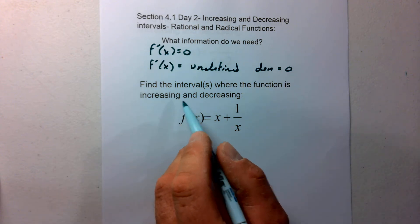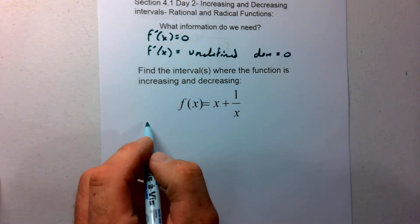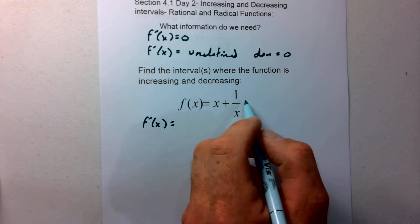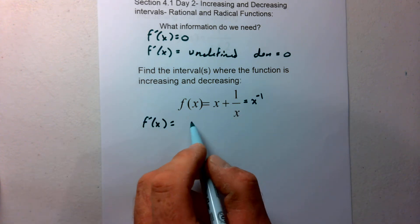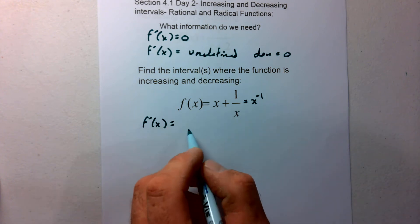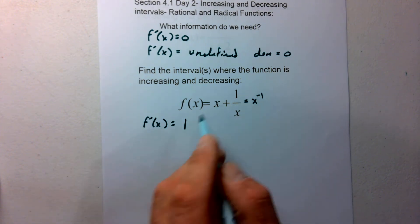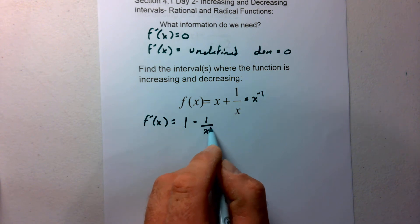So if we think about increasing and decreasing intervals for the function (x+1)/x, the first thing I'm going to do is find my derivative. We should think about 1/x — we can write that as x to the negative first, which might make finding our first derivative a little easier. If you wanted to find a common denominator you could as well, but I'm going to find the derivative regardless. So the derivative of x is 1, and the derivative of x to the negative first is negative 1 times x to the negative second.